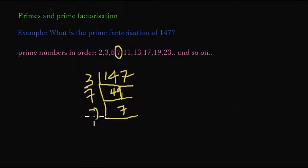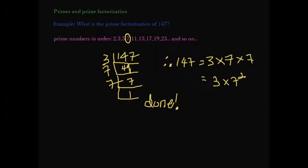And we are done. Therefore, the number 147 is a product of 3 times 7 times 7. We write the prime factorization of 147 is equal to 3 × 7 × 7, which is also equal to 3 × 7². And the prime factors of 147 are 3 and 7.